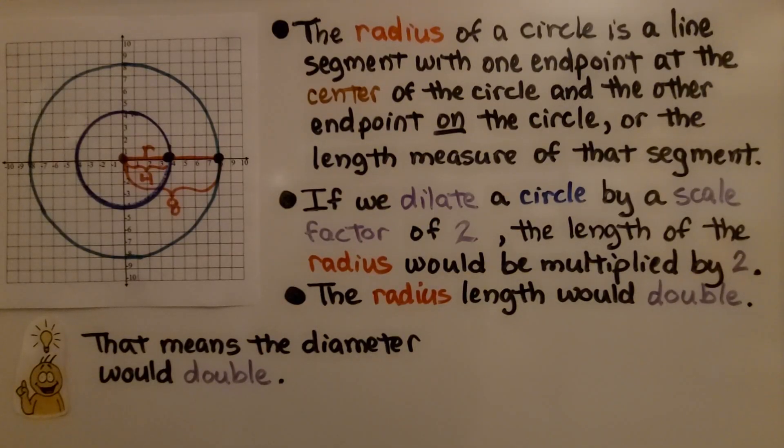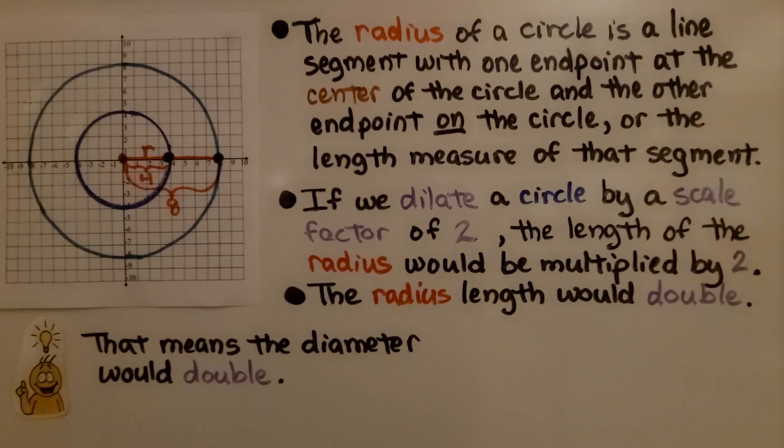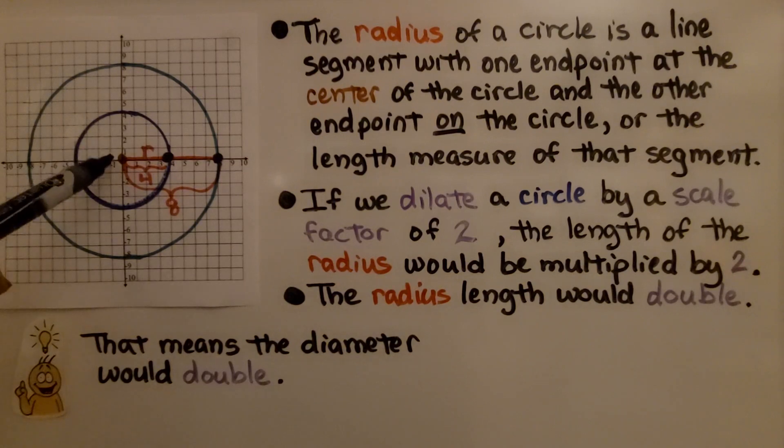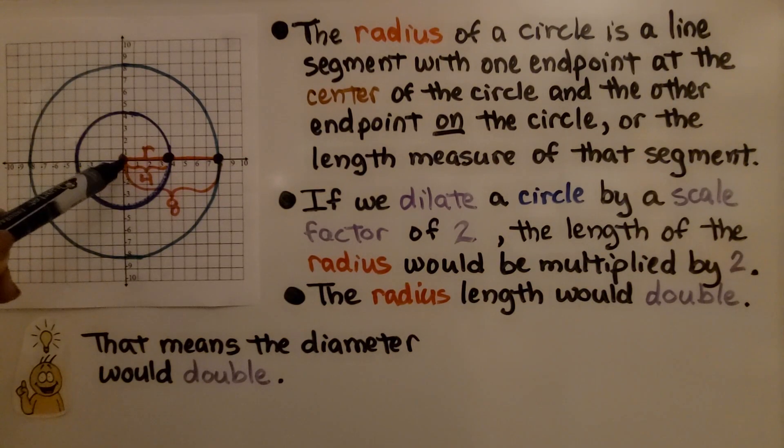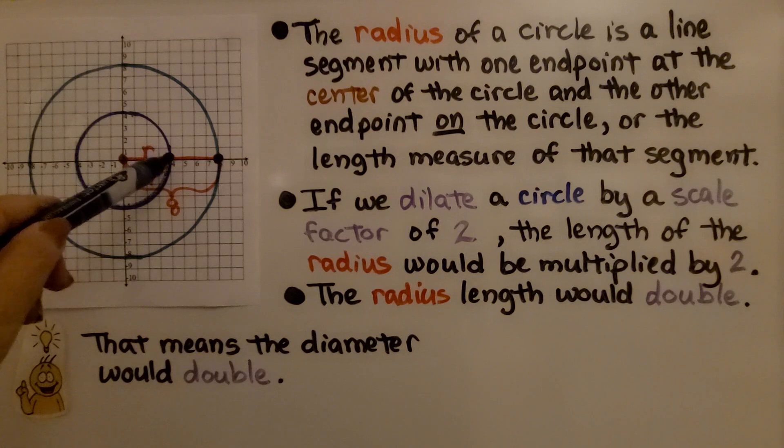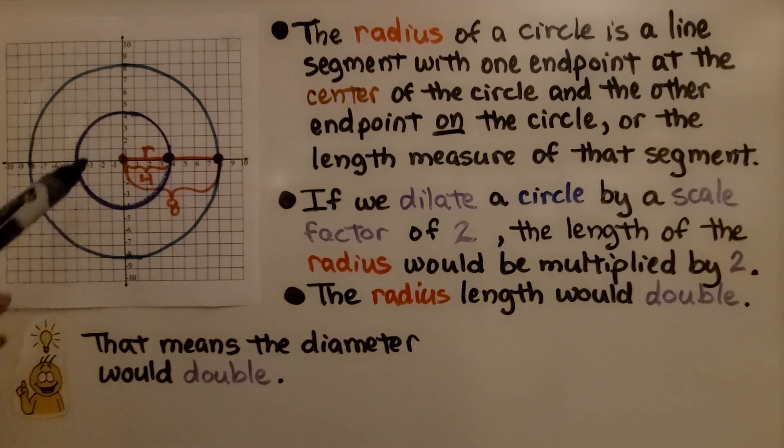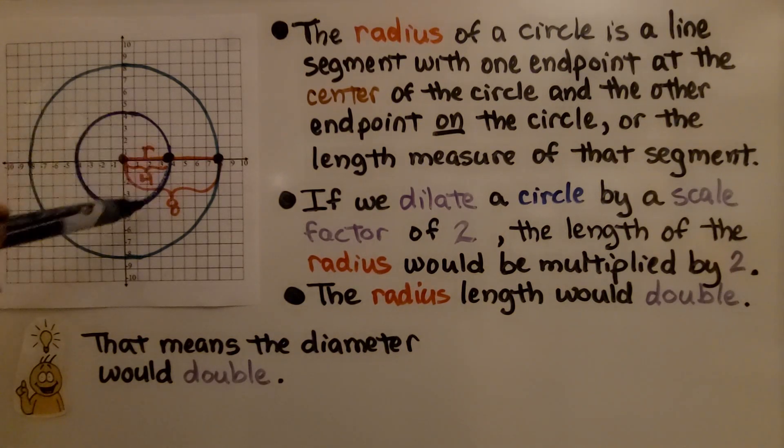The radius of a circle is a line segment with one endpoint at the center of the circle and the other endpoint on the circle, or the length measure of that segment. If we dilate a circle, like this blue circle, by a scale factor of 2, so k would equal 2, the length of the radius would be multiplied by 2. The radius length would double.